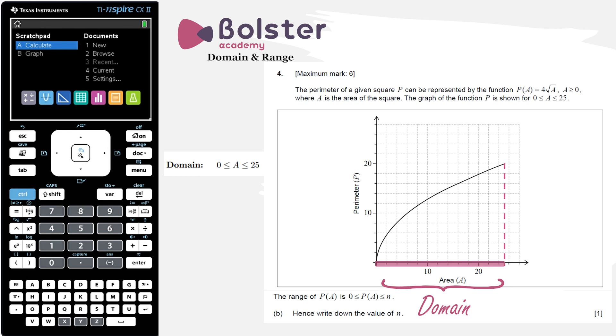Where is our range? That's the corresponding y values that these x values are mapped onto—in this case the P values of the perimeter. We can clearly see that the perimeter is from 0 all the way up to 20. So I would write down that 0 is less than or equal to P of A is less than or equal to 20. The answer to the question, the value of n, is 20.